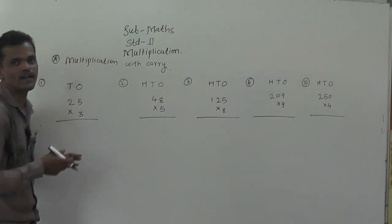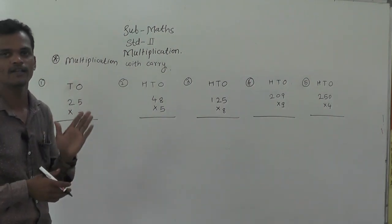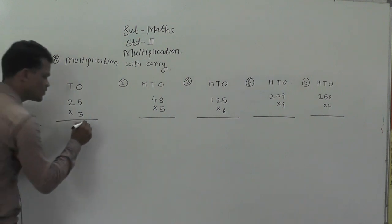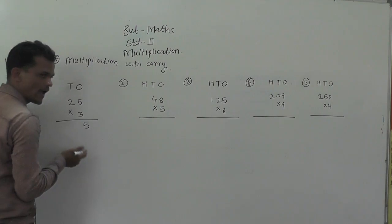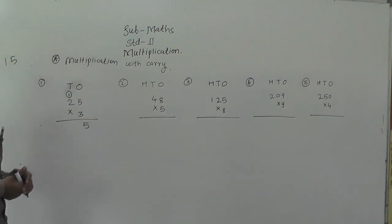3 times 5 is 15. We write 15 like this: 1, 5. The ones place digit, 5, right here, and the tens place digit carries to the tens place.